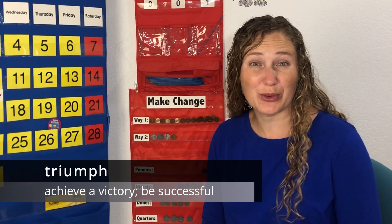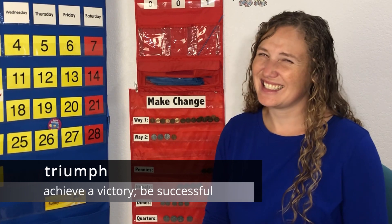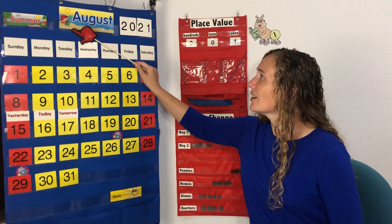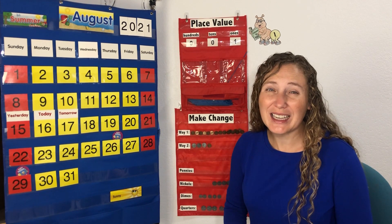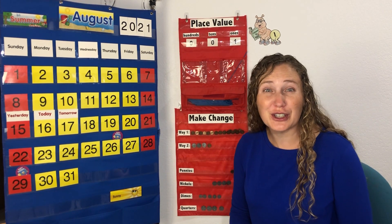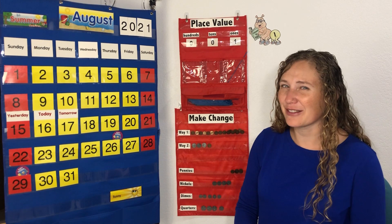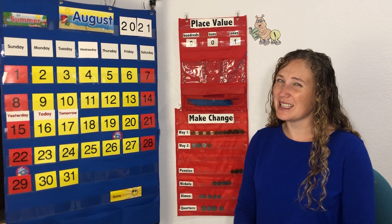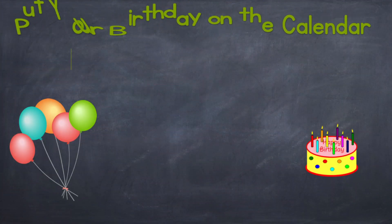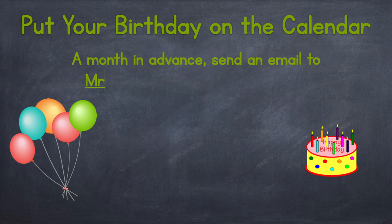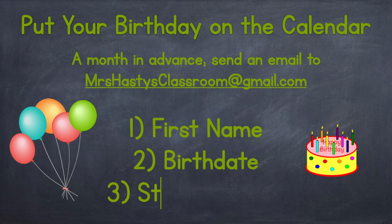Have you ever been successful or had victory in something? Maybe when you finished a race, completed a paper, or read an entire big book. Today, Monday, August 16th, 2021, we've triumphed — we've been successful in finishing our first day of calendar time. I hope that you continue to come back every Monday and Wednesday. Let's triumph and be successful and get all the way to 100!